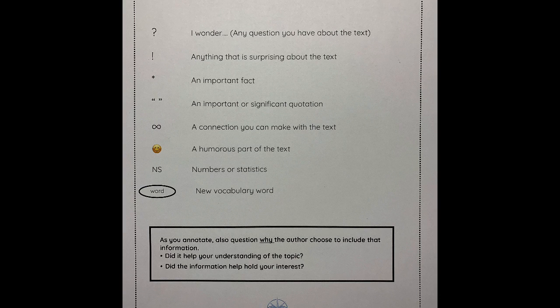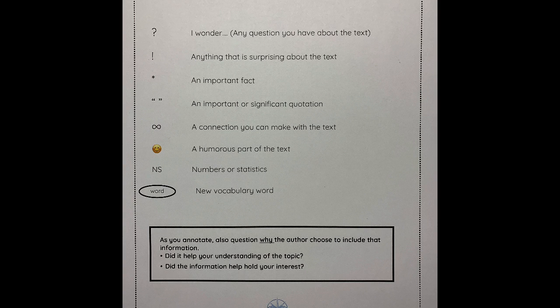For new vocabulary words or words you might not know the definition of, we're going to circle them on sticky notes since we're not writing in the book. It's also important to question why the author chose to include that information — why put that in the text at all? What meaning is the author trying to convey? Is the author trying to help your understanding of that topic? Did the information help hold your interest? Did they add it to grab or maintain your attention, or how is it adding to your learning about the subject? These are very important things for us to keep in mind as we annotate.